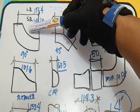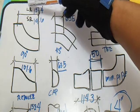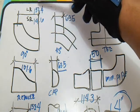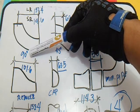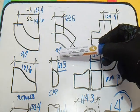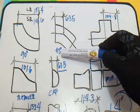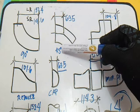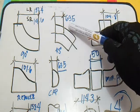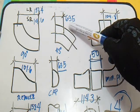LR is long radius elbow, 152.4. This is 90 degrees elbow. Next is 45 degrees elbow, so our takeoff for 45 degrees elbow is 63.5.